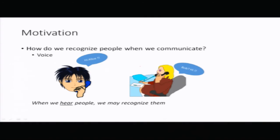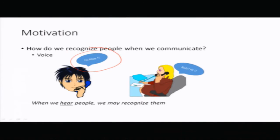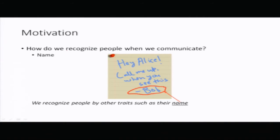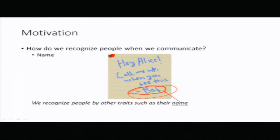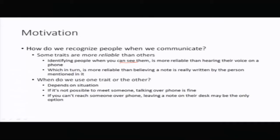Sometimes we are not able to see people. We are probably calling them over a phone or something like that. So our voice is also a characteristic by which people can recognize us. We may call our friends and they will be able to listen to our voice and recognize us. Other than voice and physical appearances, there are other traits — for example, our name. If I leave a note with my name, my friend would recognize me just by that trait. Some traits are more reliable than others: seeing people is more reliable than hearing them over a phone, and leaving a note may be good enough when calling is not possible.